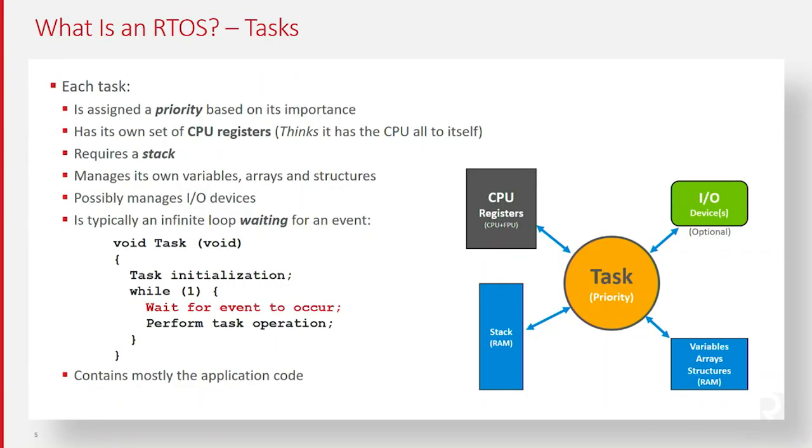A task also has its own stack space. Each task in a multitasking application requires its own stack space, which presents challenges on its own. Each task also potentially has access to variables, data structures, arrays — whatever the task does as a function — and optionally a task can own I/O devices such as peripheral devices, Ethernet controllers, USB controllers, and so on.